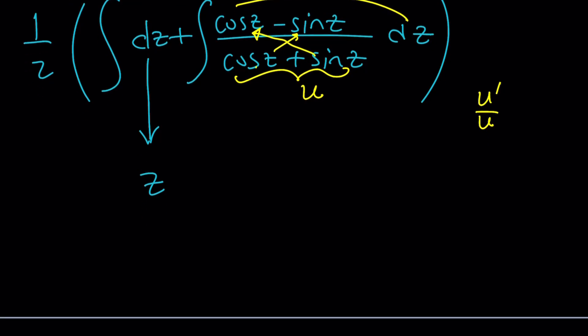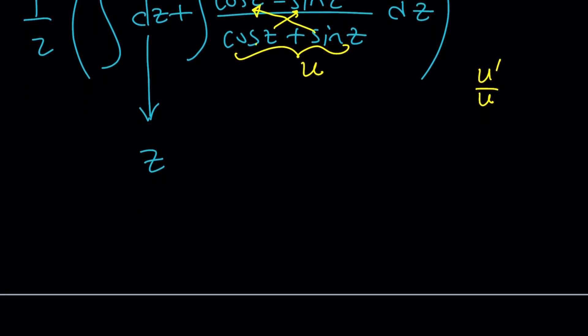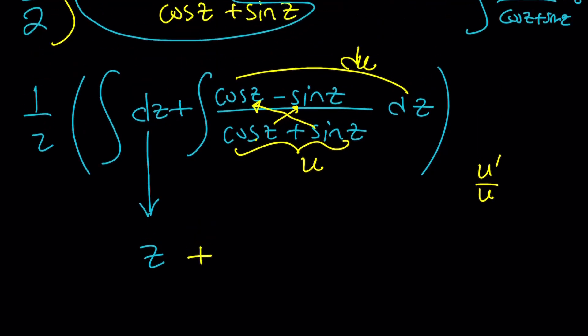And now we can go ahead and write this as z plus. Now what am I getting here? du over u. The integral of du over u is ln. ln of u. But u is cosine z plus sine z. I'm just avoiding the absolute value. You can use it. So that should be the answer.